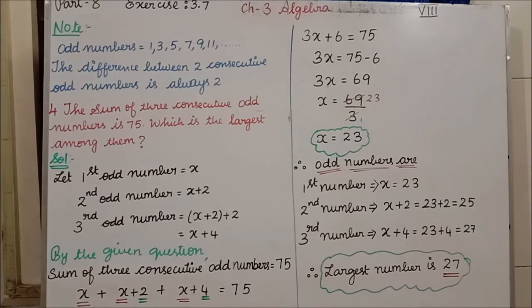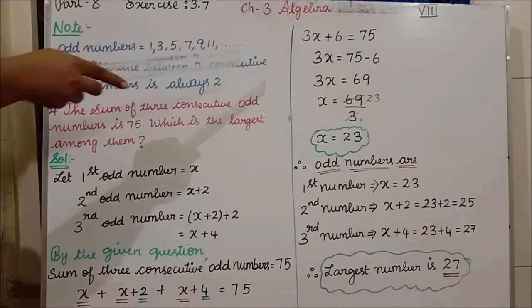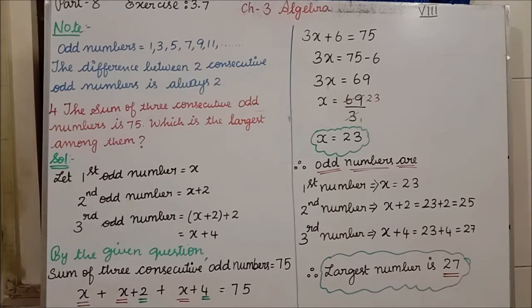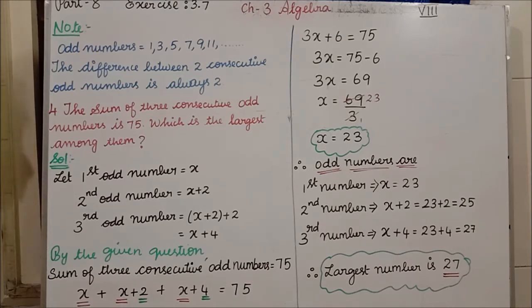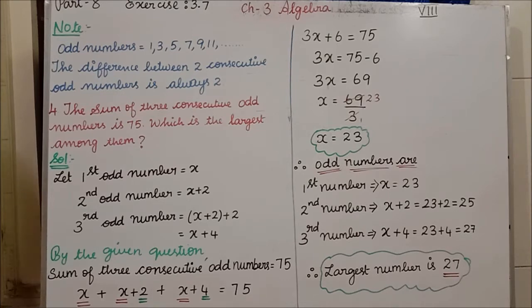The word 'consecutive' means the next next number. For example: 1, 2, 3, 4, 5 — after 1, compulsorily comes 2. Examples: 23, 24, 25 or 38, 39, 40. Consecutive numbers means the next sequential numbers. Clear this note — now we will go to question 4.